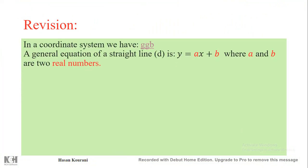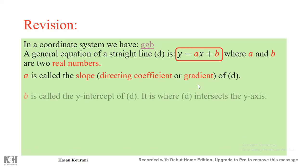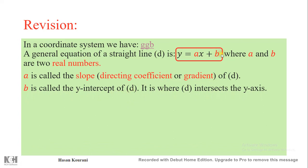As you know, in a coordinate system a general equation of a straight line is y = ax + b, where a and b are two real numbers. a is called the slope, or directing coefficient, or sometimes gradient of the line, while b is called the y-intercept — it's where the line intersects or meets the y-axis.